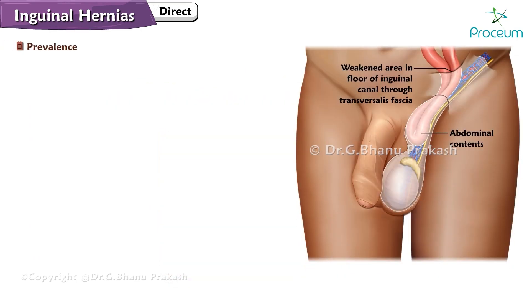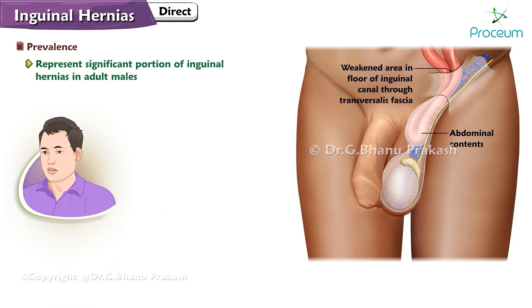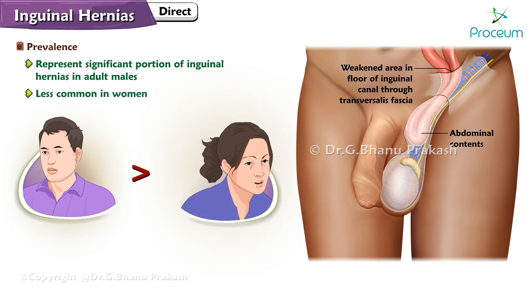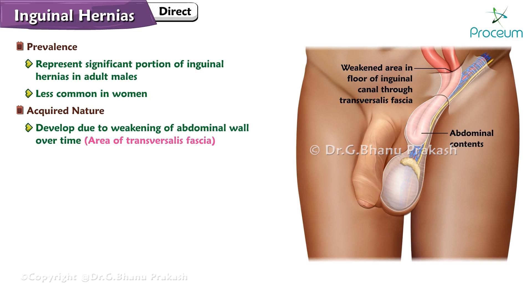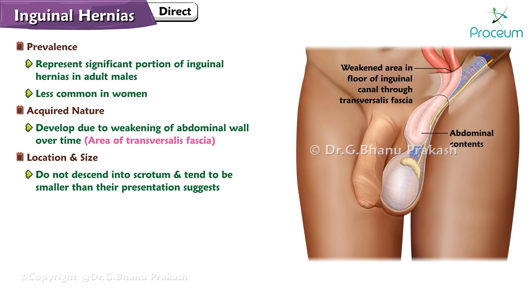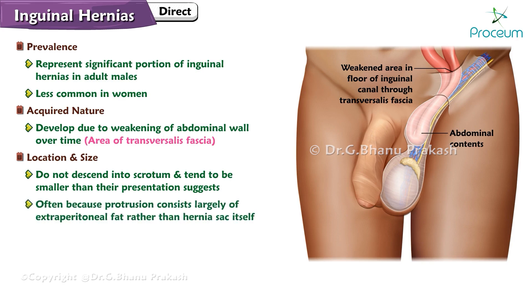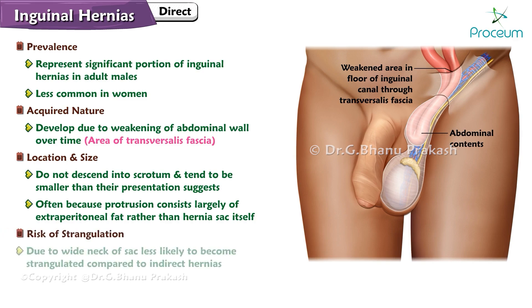Prevalence: Direct inguinal hernias represent a significant portion of inguinal hernias in adult males and are less common in women. These hernias develop due to a weakening of the abdominal wall over time, particularly in the area of the transversalis fascia. They typically do not descend into the scrotum and tend to be smaller than their presentation suggests, often because the protrusion consists largely of extraperitoneal fat. Due to the wide neck of the hernia sac, direct inguinal hernias are less likely to become strangulated compared to indirect hernias.